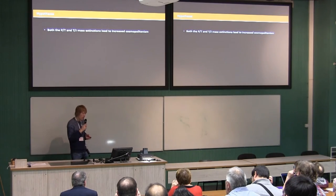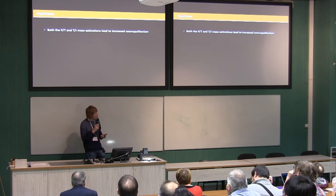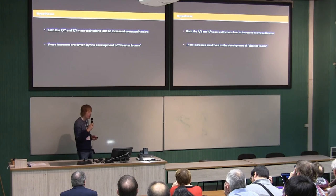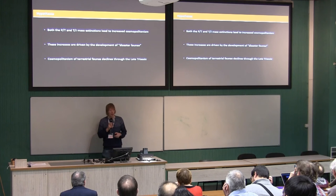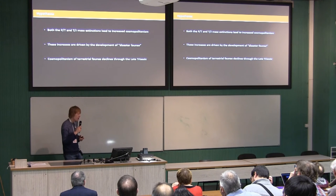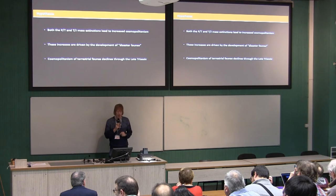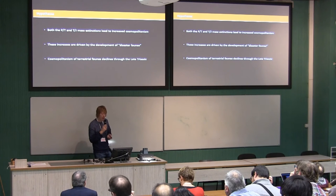With this in mind, we've been attempting to build upon Seelaw's work and address a number of key hypotheses. We're interested in testing whether both the Permo-Triassic and the Triassic-Jurassic mass extinctions led to increases in global cosmopolitanism. We also want to see if those increases are driven by the development of disaster faunas, and how that cosmopolitanism changes through time — does it decay? It's been suggested that late Triassic faunas were very endemic, so how does cosmopolitanism decay through the Triassic as endemism builds up?